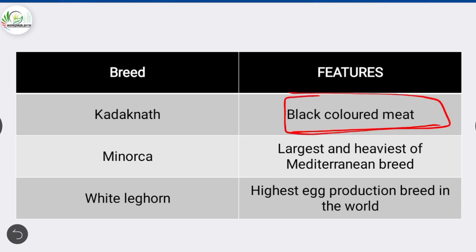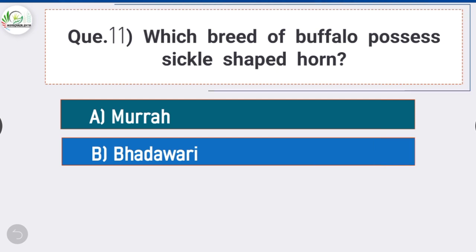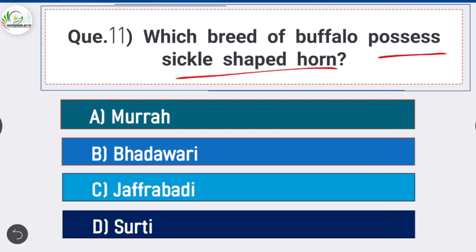Question number ten: which is the largest and heaviest of the Mediterranean breeds? White Leghorn is the highest egg production breed in the world.